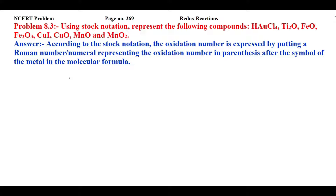Students, this is NCERT problem number 8.3 from the chapter Redox Reactions. Using stock notation, represent the following compounds. For this, first we need to know the definition of stock notation. According to stock notation, the oxidation number is expressed by putting a Roman numeral representing the oxidation number in parenthesis after the symbol of the metal in the molecular formula. So we have to identify the metal first, then express the oxidation state of that metal in Roman numerals.